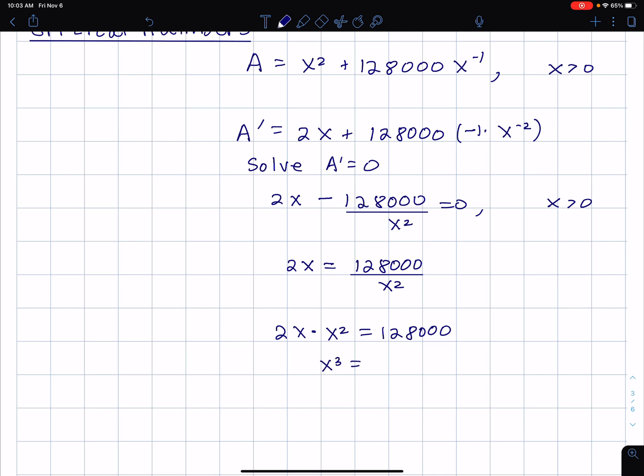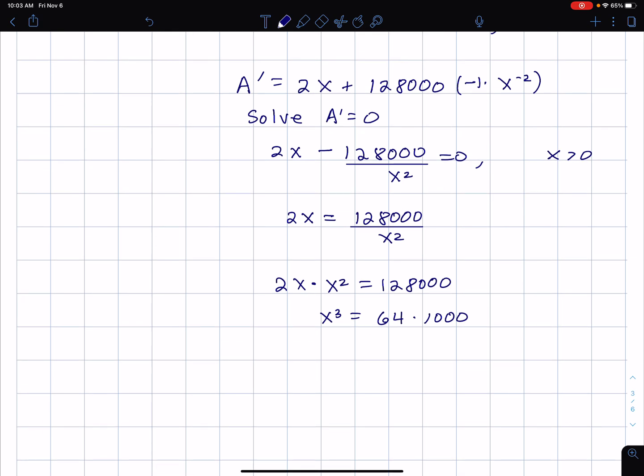Then if I divide by 2, I get x cubed equals 64 times 1,000. I wrote this as 64 times 1,000 because I'm going to take the cube root of all this. 64 equals 4 times 4 times 4, so the cube root of 64 is 4. 1,000 equals 10 times 10 times 10, so the cube root of 1,000 is 10. So we get x equals 40, and I believe it's centimeters. So that's one of our dimensions.